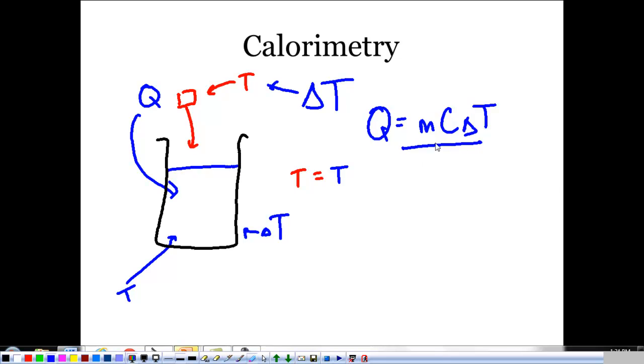Conversely, if we don't know the specific heat of an object, we can look at how much heat the water gains and work backwards to find the specific heat of the metal. We're going to do a calorimetry lab in class tomorrow. And what you're going to see next is a demonstration of that calorimetry lab.